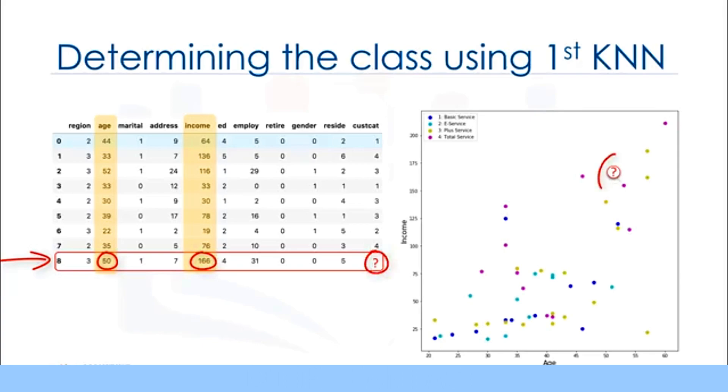Can we find one of the closest cases and assign the same class label to our new customer? Can we also say that the class of our new customer is most probably group 4, i.e., total service, because its nearest neighbor is also of class 4? Yes, we can. In fact, it is the first nearest neighbor. Now, the question is, to what extent can we trust our judgment, which is based on the first nearest neighbor?